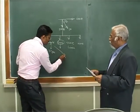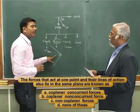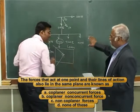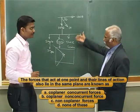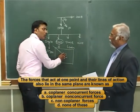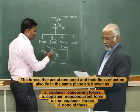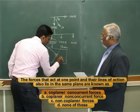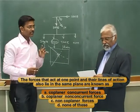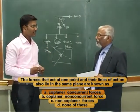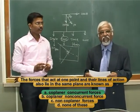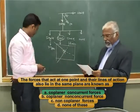Coplanar means lying in the same plane, and concurrent means passing through a single point. If all forces pass through that point, it is considered a concurrent force. Coplanar means lying in the same plane — so if this is a plane, all these forces are lying in the same plane. So concurrent coplanar forces — that is the correct answer. The line of action is the line along which the force acts. So the answer is A — coplanar concurrent forces. Are you sure? Yes, definitely. And you are perfectly right.